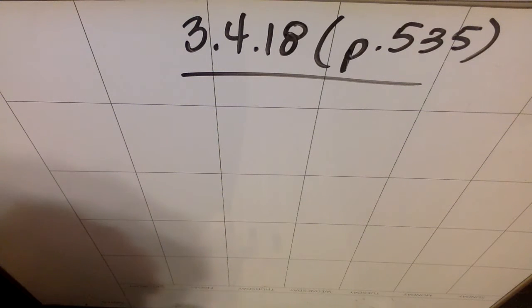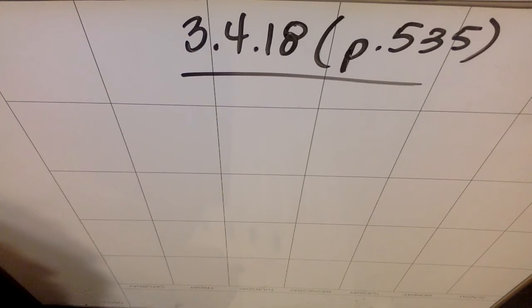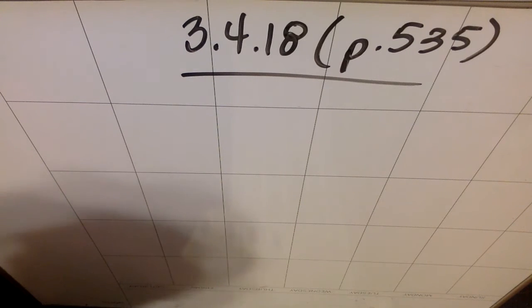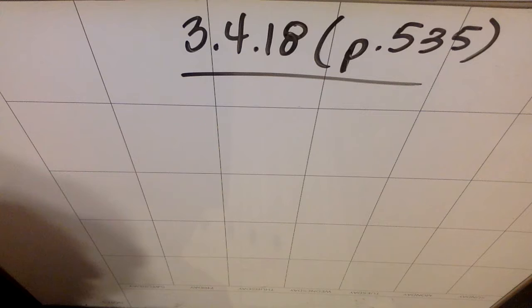Alright, so we're doing more SAT prep. This is 3.4.18 on page 535, so that is practice test 3, section 4, number 18. It is the last problem in the section, which means it's hard, because in the old SAT, problems were tiered by difficulty and they got harder as you went.